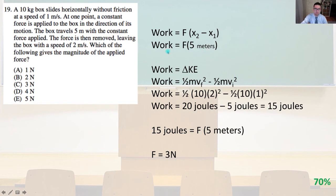Our work is going to equal 20 joules minus 5 joules, that's going to equal 15 joules. And as we did above, our work equaled our force times our distance, so 15 joules is equivalent to the force times our 5 meters, our x2 minus x1, our distance. So therefore the force is going to have to be 3 newtons, and that is answer C.